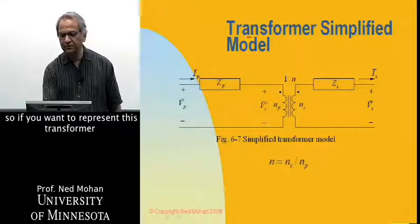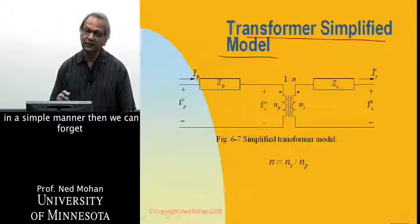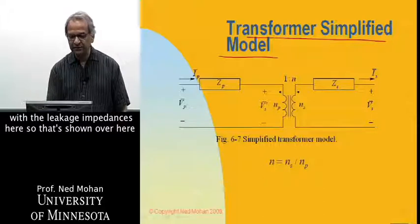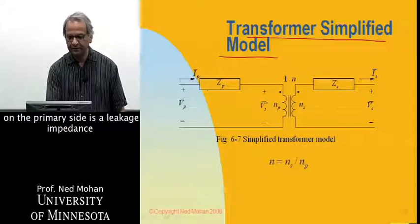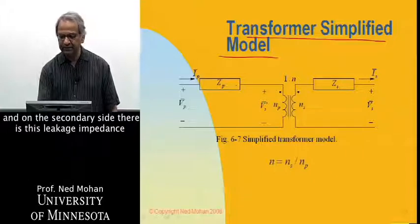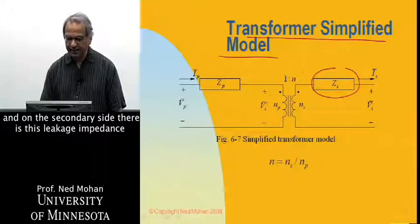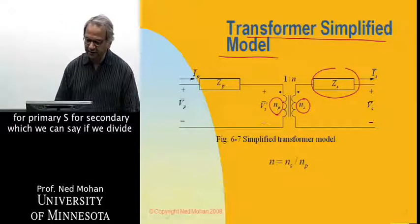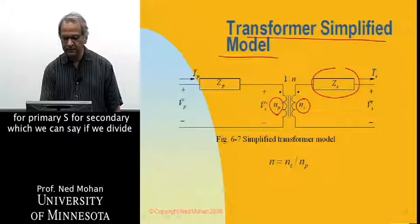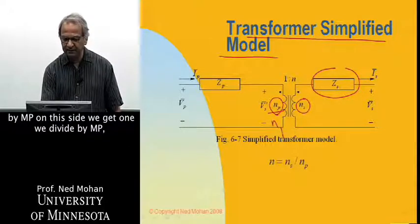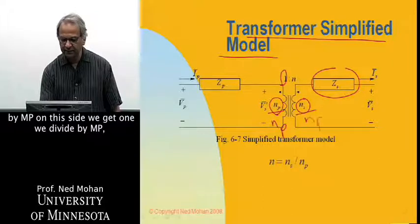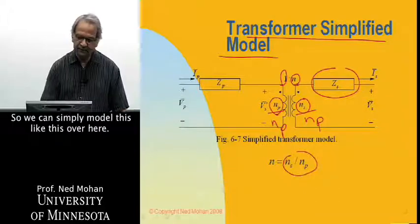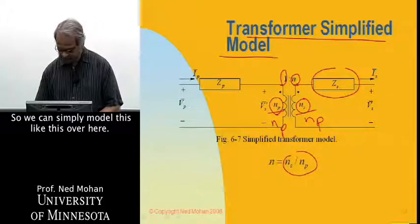So if you want to represent this transformer in a simple manner, then we can forget about the magnetizing reactance and only deal with the leakage impedances here. So that's shown over here. On the primary side, there's a leakage impedance, and on the secondary side, there is this leakage impedance. And we have NP and N sub S number of turns, P for primary, S for secondary, which we can say, if you divide by NP on this side, we get one. If we divide by NP also here, we get this little n, and this n is then NS over NP.